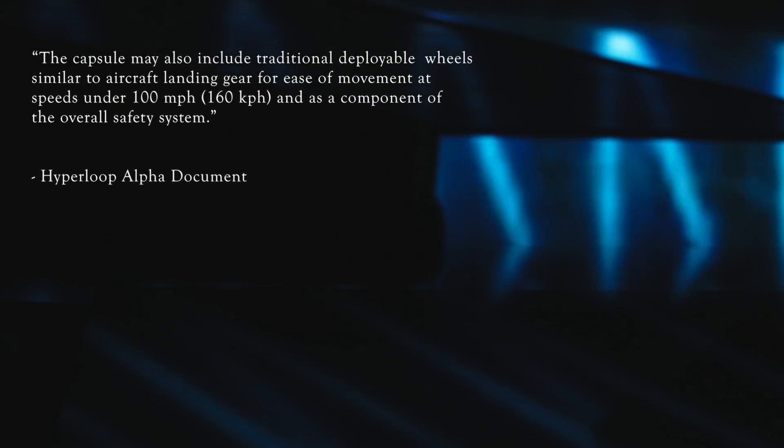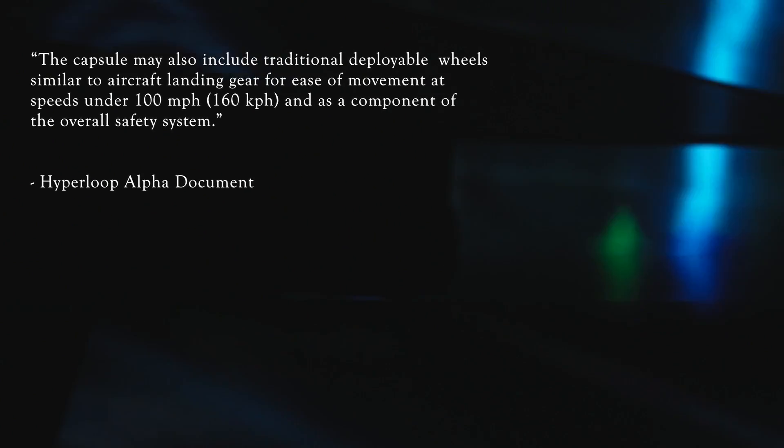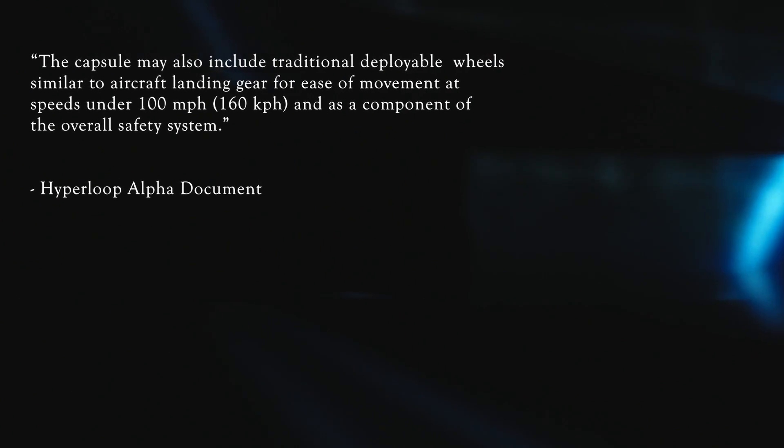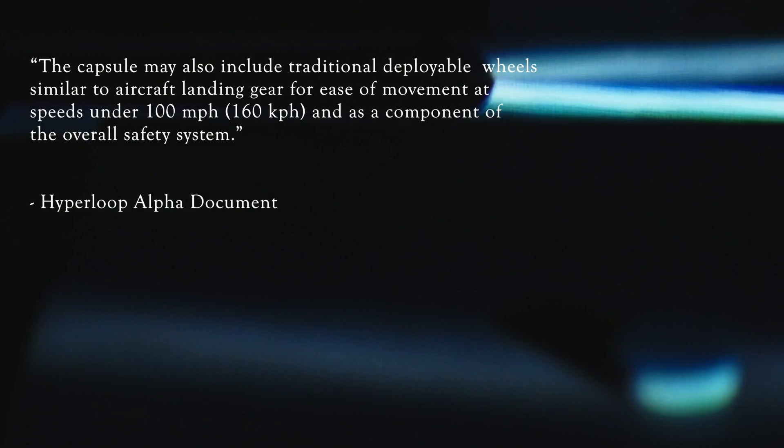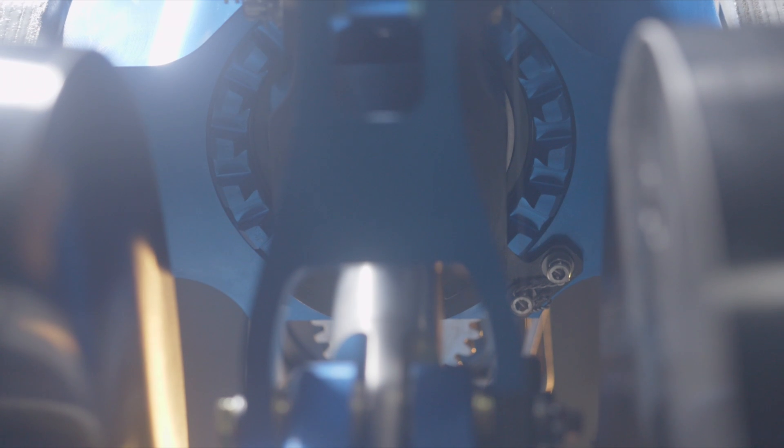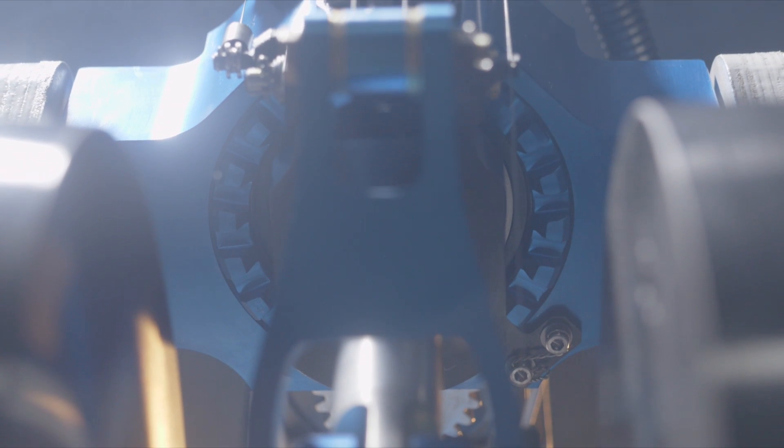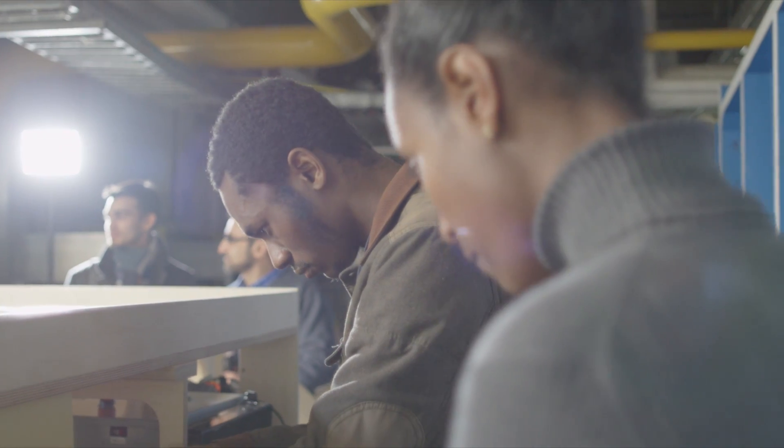Our team was inspired by a line of text in Elon Musk's alpha document that stated that the Hyperloop system would consist of a deployable wheel system for the low speed requirement and also for emergency scenarios of the Hyperloop. The Ryerson International Hyperloop team developed the Hyperloop deployable wheel system to fulfill the low speed requirements of the Hyperloop and also for emergency scenarios.